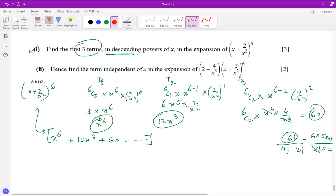The next part is to find the term independent of x in this expansion: 2 minus 4 by x cubed times x to the power 6 plus 12x cubed plus 60. Term independent of x means finding the constant term which does not contain x.